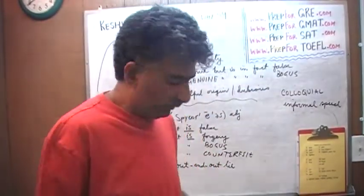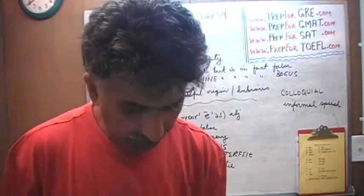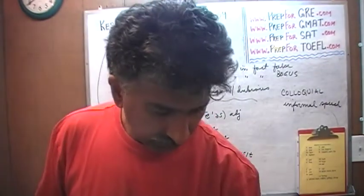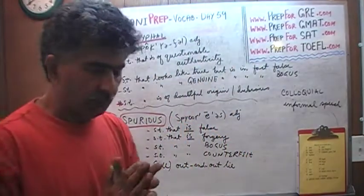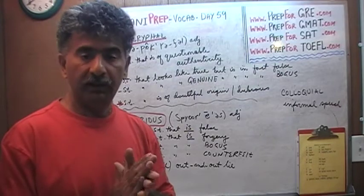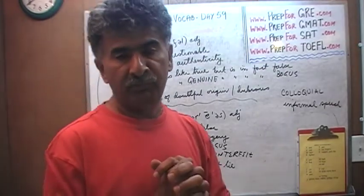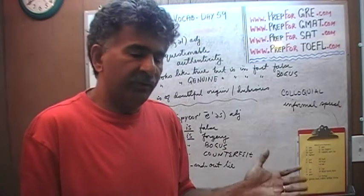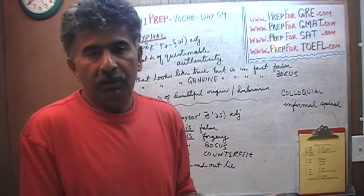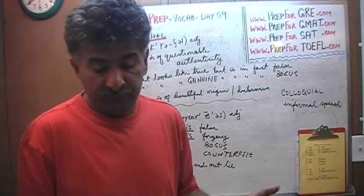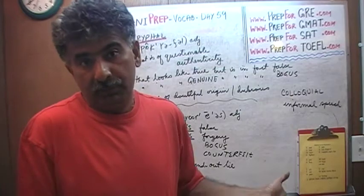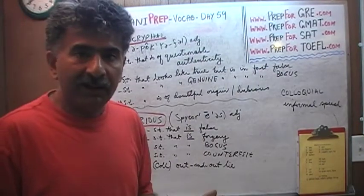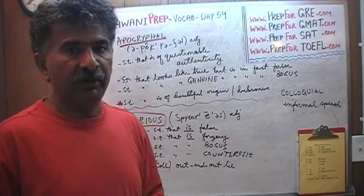For example, if somebody gives you a hundred-dollar bill with a picture of Bozo the Clown on it, that is spurious — not apocryphal. It doesn't even look real. But if something looks real and you begin to wonder whether it is real or not, that is when you use apocryphal. Spurious means outright false — counterfeit, bogus, not real.